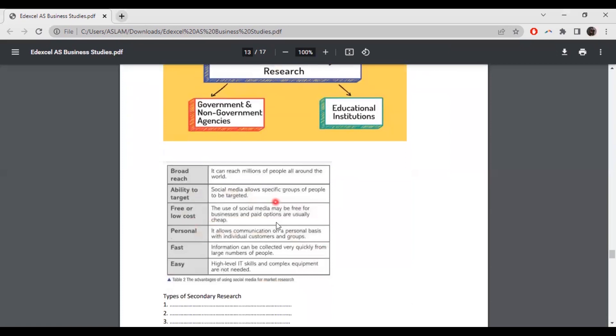There are reasons why you wanted to do secondary research. First one, broad reach. It can reach millions of people all around the world. So it has already been carried out this type of research. You don't want to specially do a research because if the research is available, you can use it, but not always accurate to the research you are expecting. So it won't give the correct information that you require.